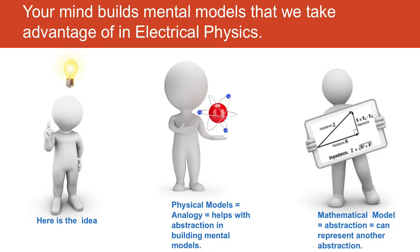Your mind builds mental models that we can take advantage of in electrical physics. Physical models we quite often use — we call these analogies. They help us with abstraction in building mental models. You can see here a little man holding a planetary model of an atom with electrons bouncing around the outside. People often use that as a model, but it is an abstraction — it doesn't really exist, but we use it as a mental model.